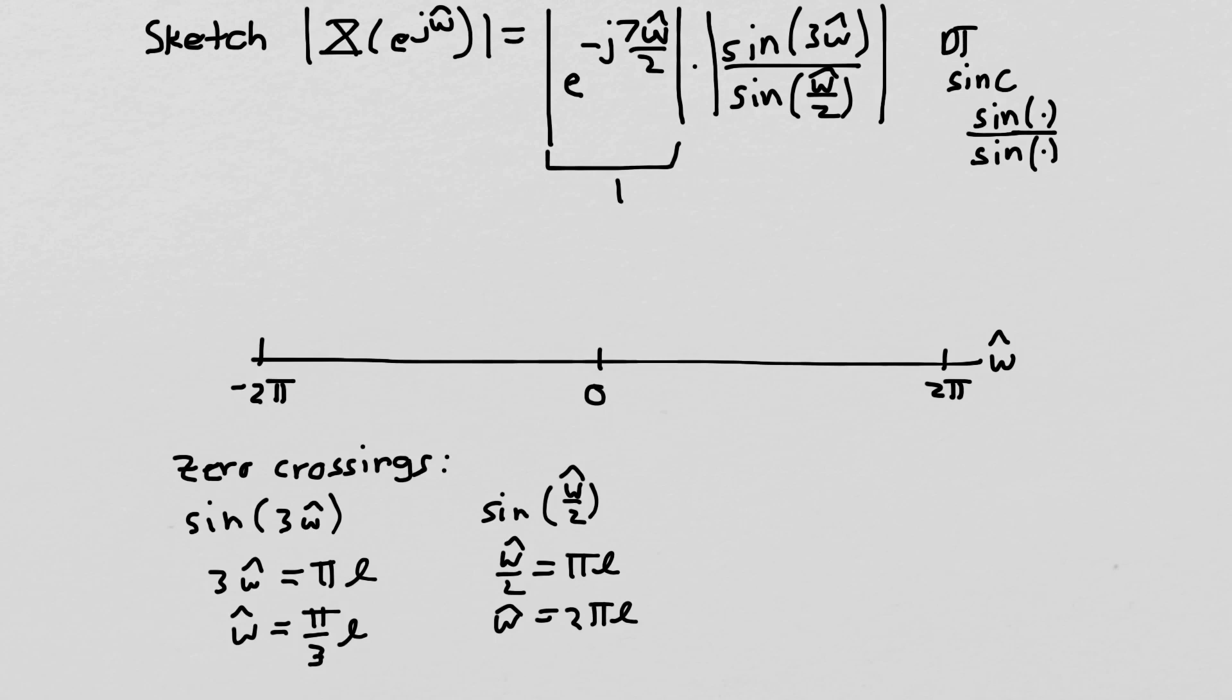We can also say, what is it going to be equal to at zero? And then what it's equal to at zero is also what it's equal to at two pi. So if we're looking at X of e to the j omega hat at omega hat equals zero, if we look at this expression up here, we notice that if I plug in zero here and zero here, I get something that's zero over zero. So one way I could figure out what's going on there is I could use L'Hopital's rule and solve for, take the derivative of the top, the derivative of the bottom, and then plug in for omega hat equals zero.